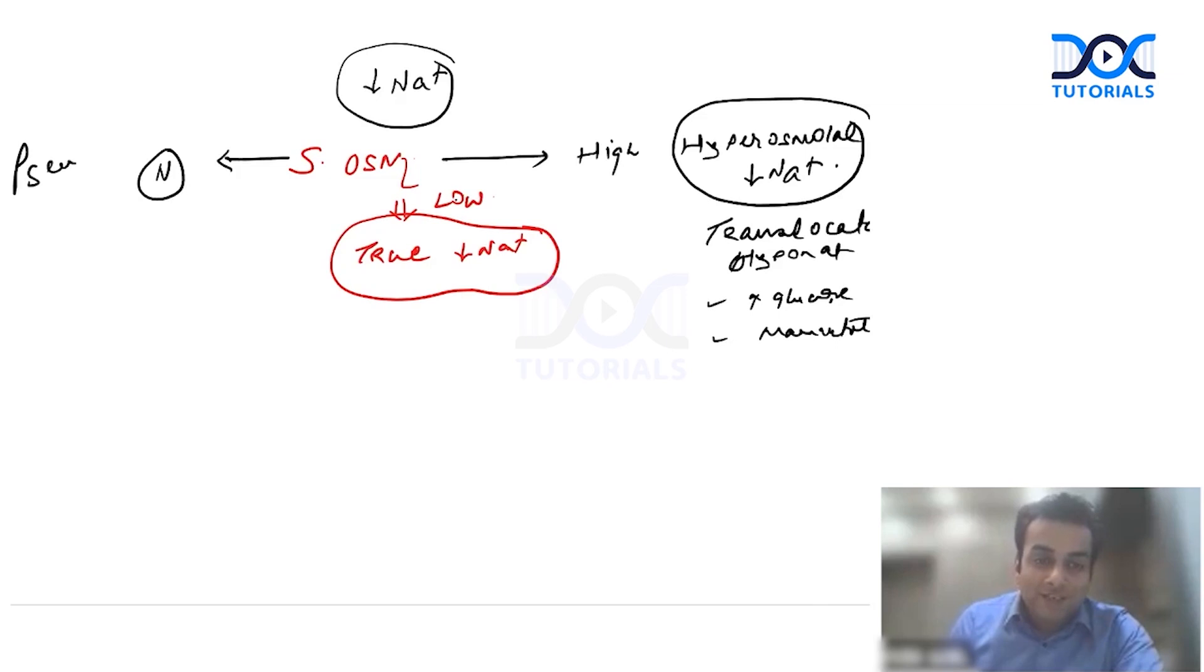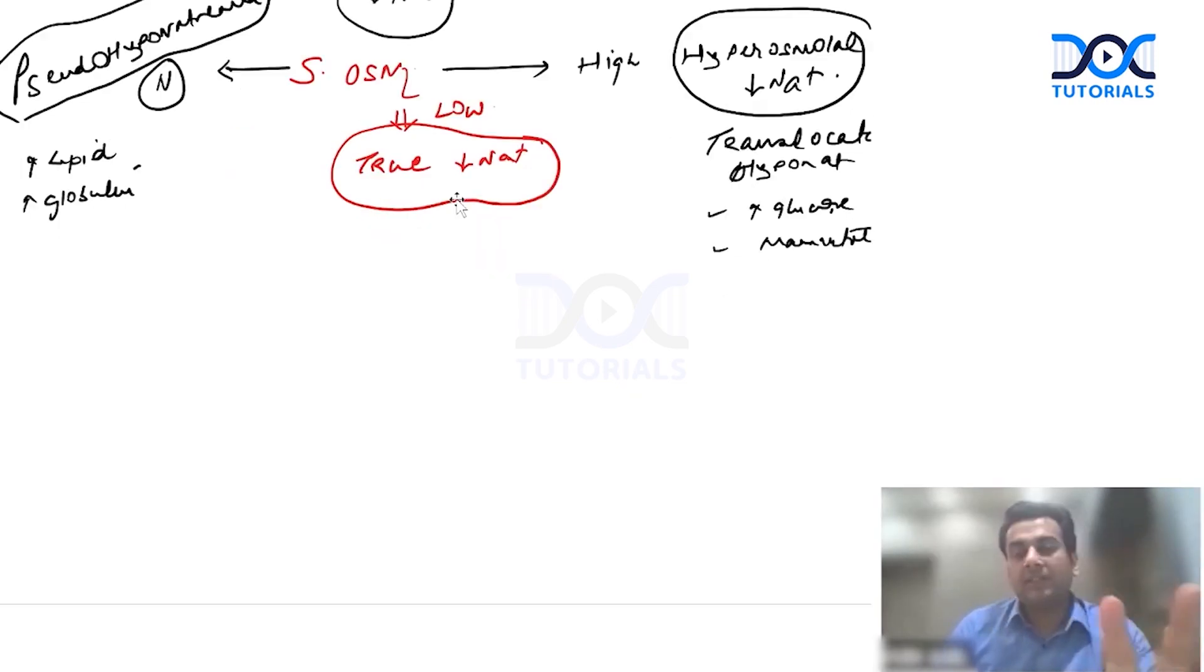If the serum osmolality is normal, that is known as pseudohyponatremia because it is not a true hyponatremia. It is actually a lab artifact due to the measurement via the indirect electrodes. Please understand this is a lab artifact. This occurs when the solid component in the blood increases, for example hyperlipidemia, for example hyperglobulinemia like in multiple myeloma, for example if you have administered the patient IVIG.